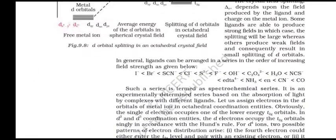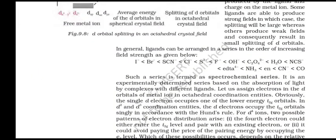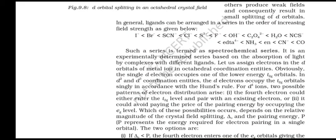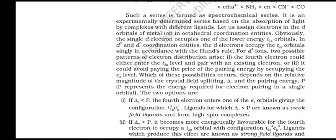The crystal field splitting delta-o depends upon the field produced by the ligand and the charge on the metal ion. Some ligands produce strong fields resulting in large splitting, while others produce weak fields with small splitting. In general, ligands can be arranged in a series in order of increasing field strength — this is called the spectrochemical series.